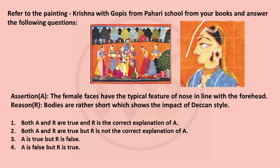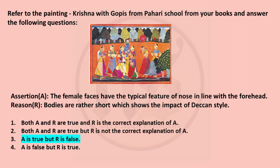Referring to Krishna with Gopis from Pahadi school: Assertion says the female faces have the typical feature of nose in line with the forehead — this is a very important characteristic feature of the Basoli sub-school, with very little curve connecting the nose to the forehead. This is absolutely right. The Reason says bodies are rather short, which shows the impact of Deccan style. In Pahadi school, Deccan style influence was hardly there — they were influenced by Mughal and Rajasthani styles, not Deccan. So the reason is absolutely wrong. Our correct answer is: A is true, but R is false.